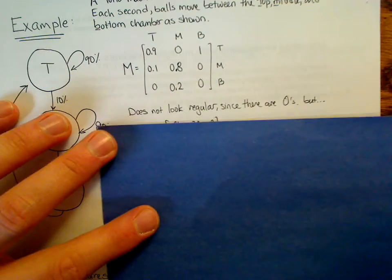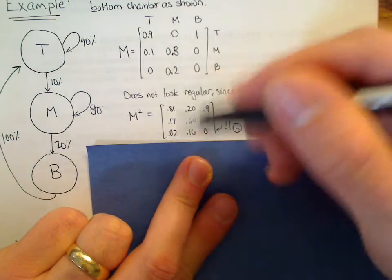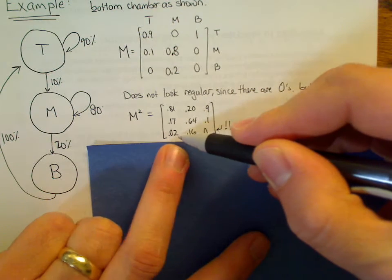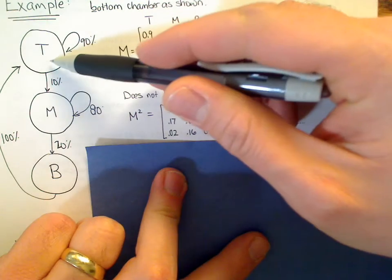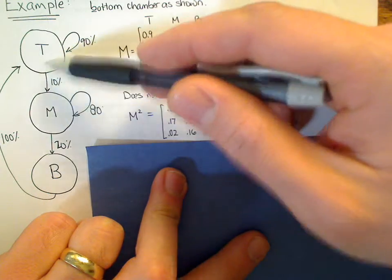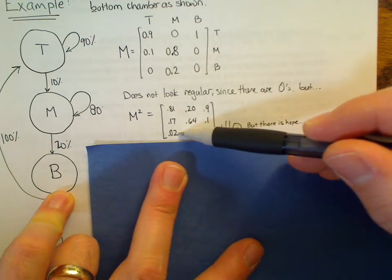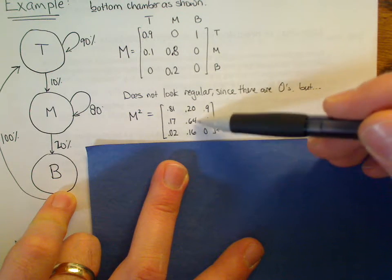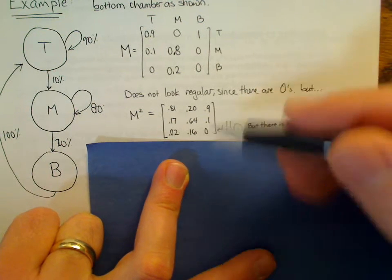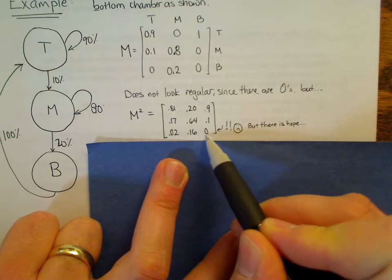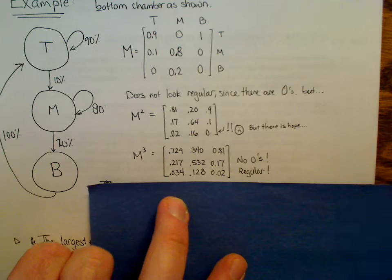At this point, this doesn't look regular. It's got a bunch of 0s in it. But, okay, we could square it, M times M, and we get 0.81. We get all these. And these numbers, by the way, aren't just curiosities. They really have meaning here. For example, this 0.02, that means that 2% of the balls that started in T after two rounds or two seconds end up in the bottom. So if we'd start with all 1,000 up here at the top, then after one round, 100 of those, 10% would have ended up in the M, and then 20% of that 100, which were 20, would end up in the bottom, and that's exactly what this is saying. And likewise for everything else, 64% within, in two rounds, 64% of the balls in M stayed in M after two seconds. But, I mean, we're not really worrying about this by itself, but it does have meaning. But this doesn't look regular because we still have a 0 there.